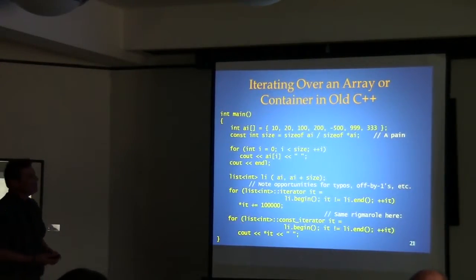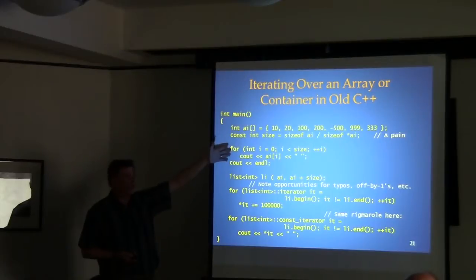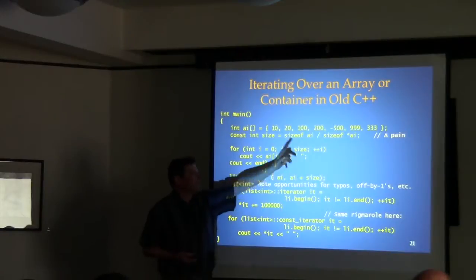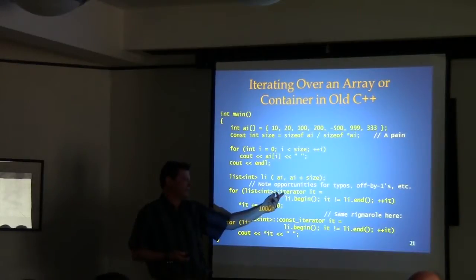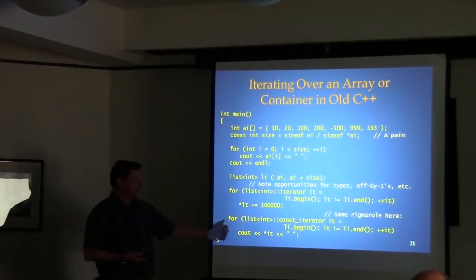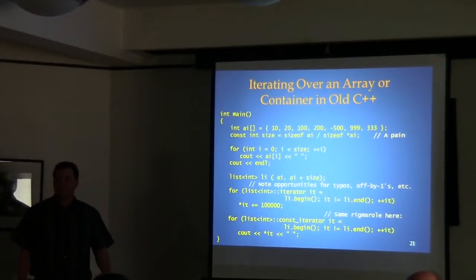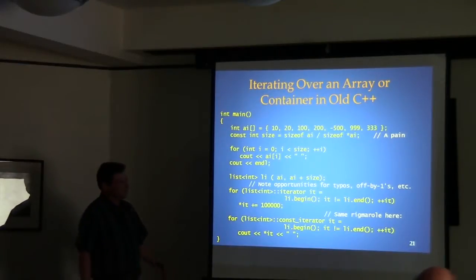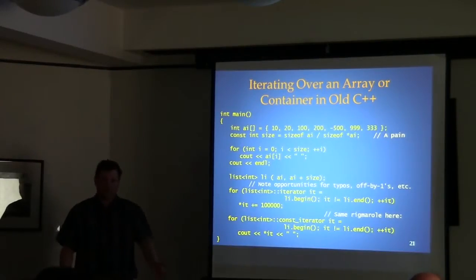New topic: range-based for. In old C++ iterating over an array or container requires a for loop with a variable you initialize, test, and increment. With an STL container you have a for loop where you initialize the iterator, test for the end condition, and increment it. Any time you have to write all your own loop, there's potential for errors — off-by-one errors, typos. That was really the only approach provided in old C++.